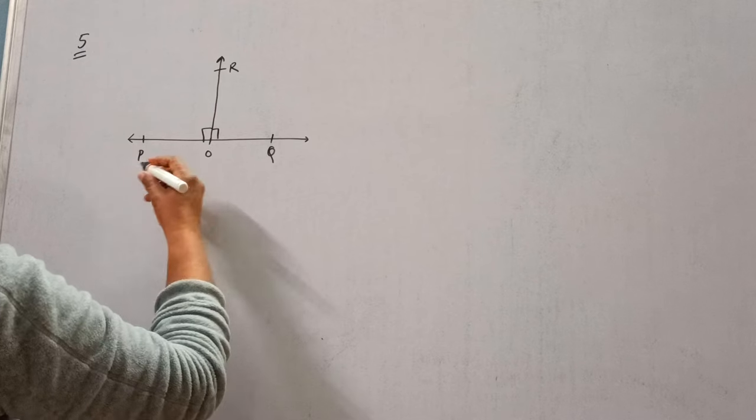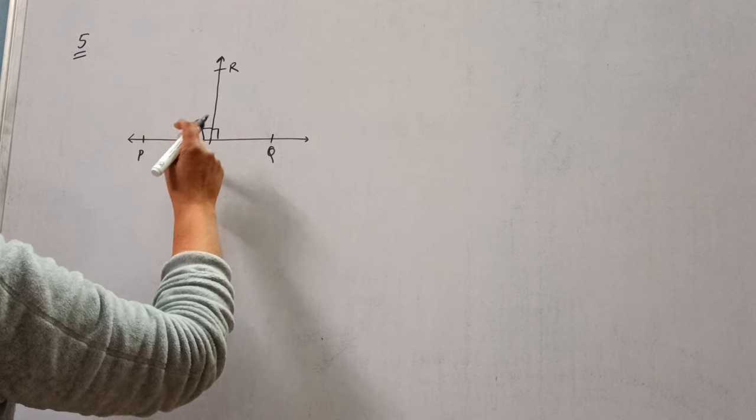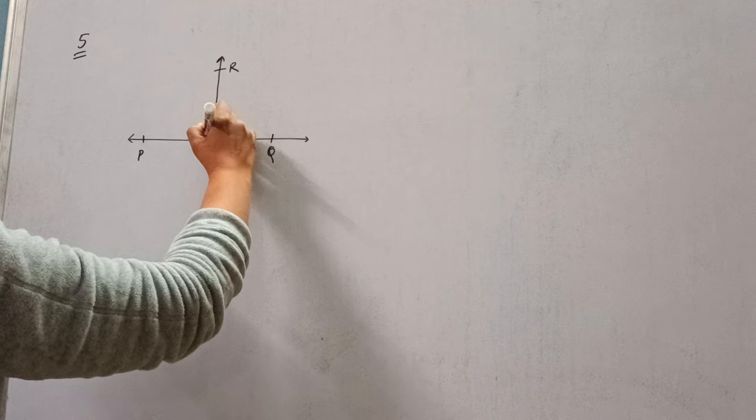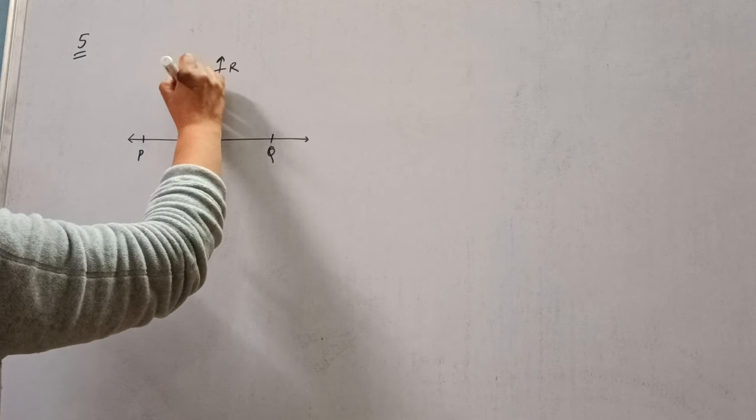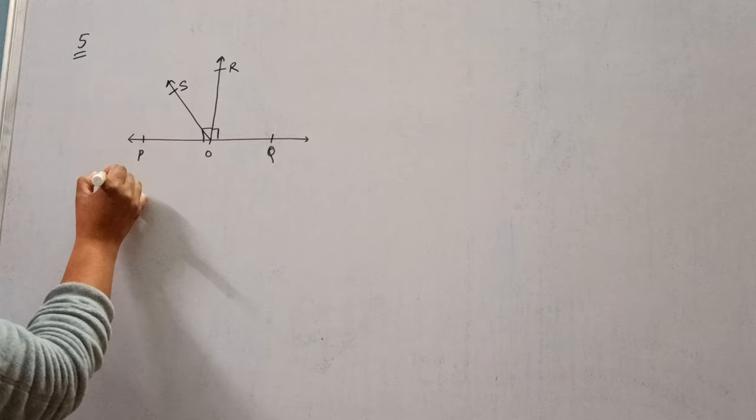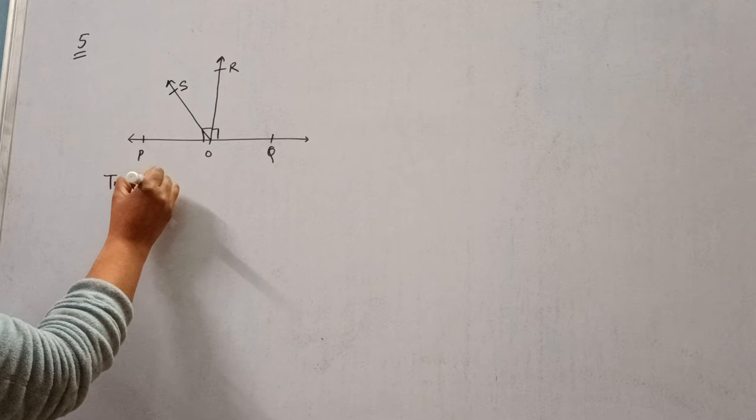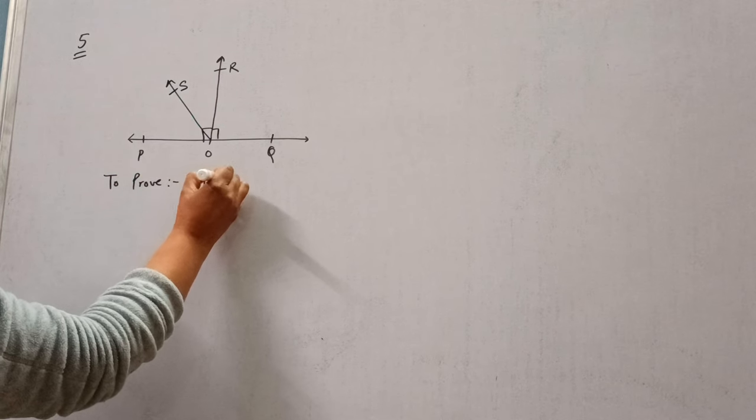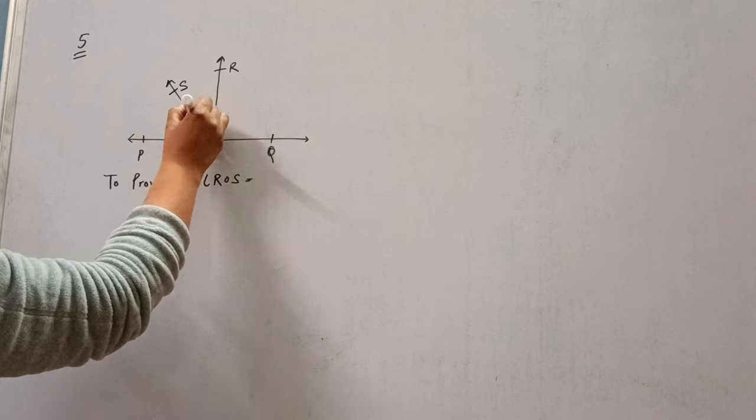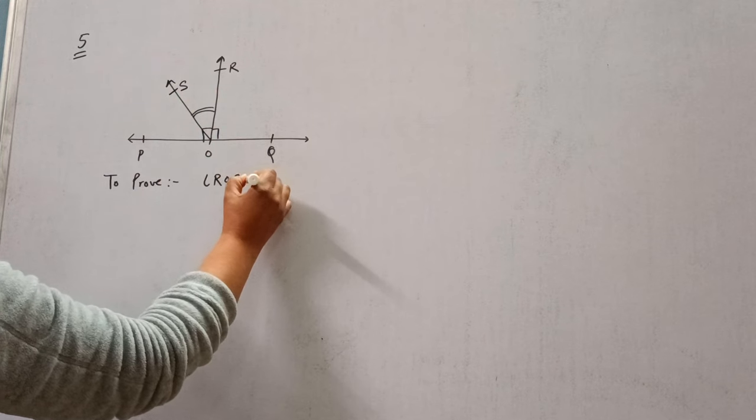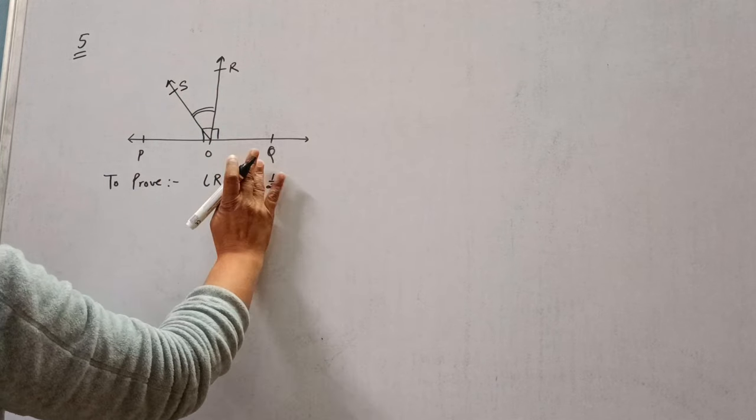OS is another ray lying between ray OP and OR. This is to prove that angle ROS is half of angle QOS minus angle POS.